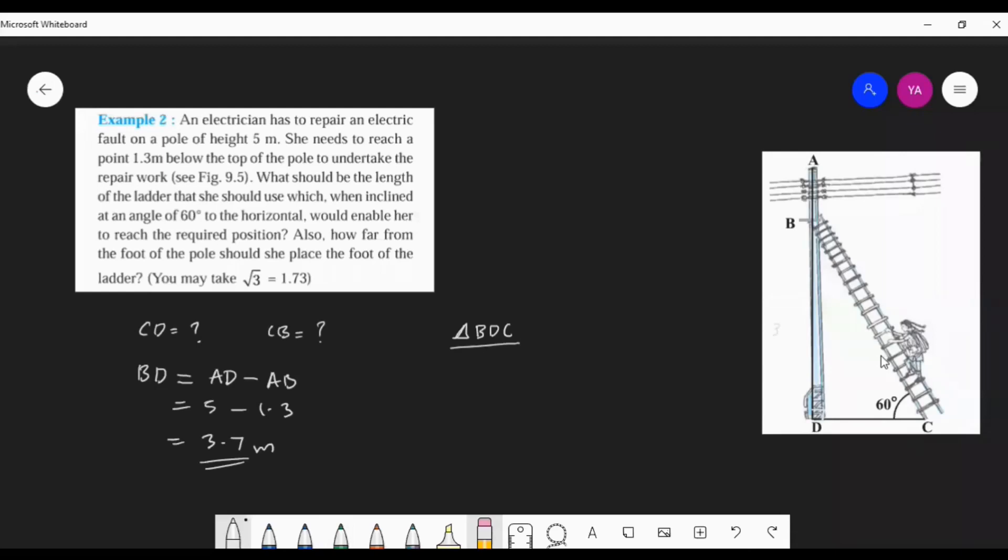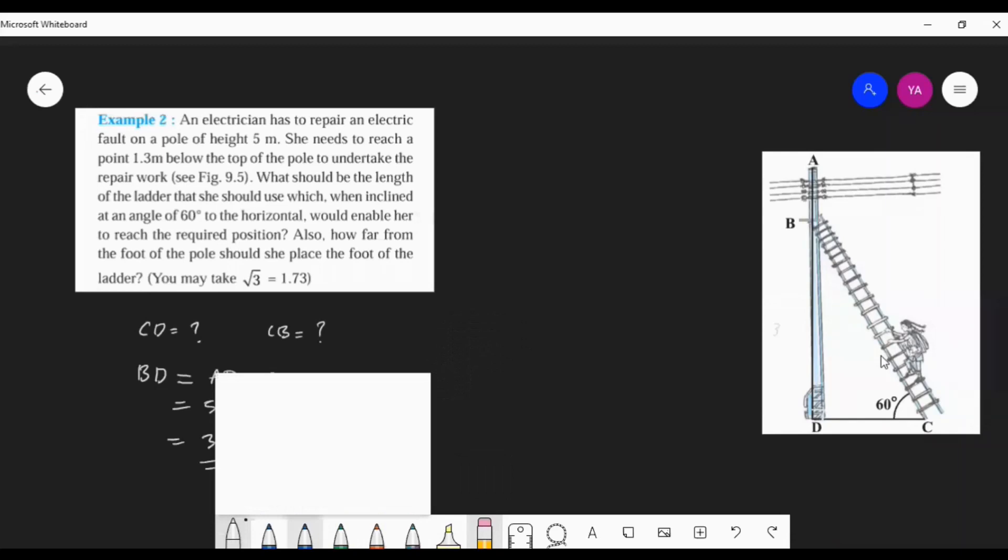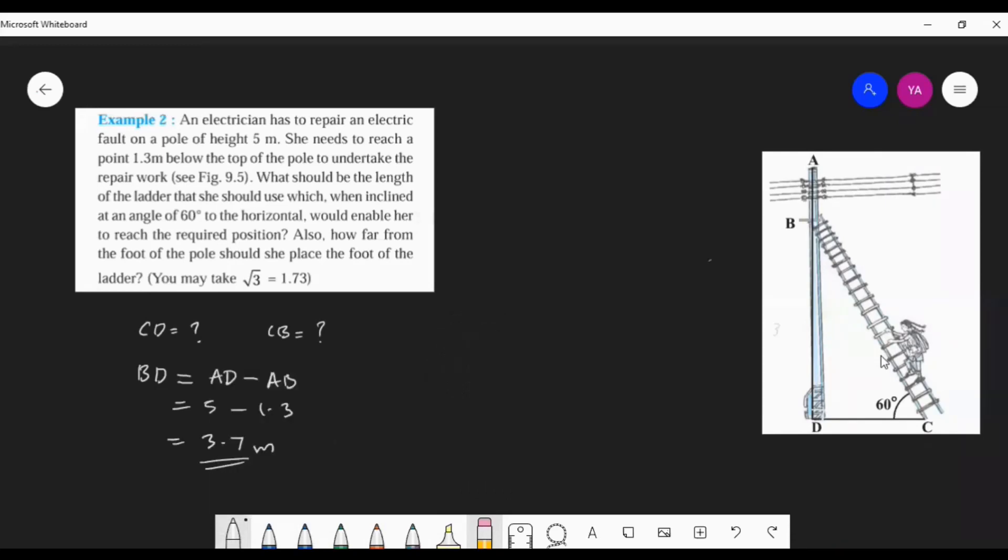BD we know, the side opposite to the angle of elevation. We know that 3.7 meter, and we want to find out the side adjacent and the hypotenuse. So first we can consider BC, the hypotenuse. How we can find out the hypotenuse? Which trigonometry ratio we want to take? Of course, sine. We know this angle, so with respect to angle C we want to take sine.